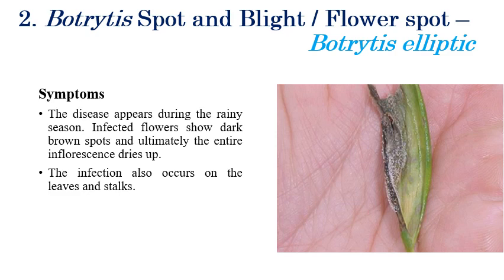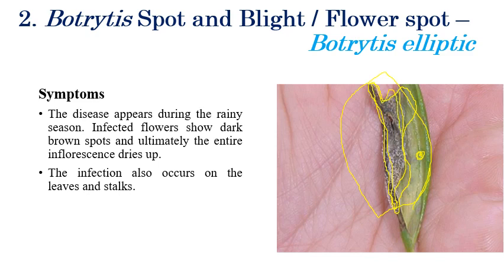Botrytis spot, blight, or flower spot is caused by Botrytis elliptica. The symptoms mainly appear especially during the rainy season. Initially, small brown color spots appear on the flowers. Later stages, these brown spots coalesce and the entire leaf may dry up. The infection can be observed mainly in leaves as well as stalks.